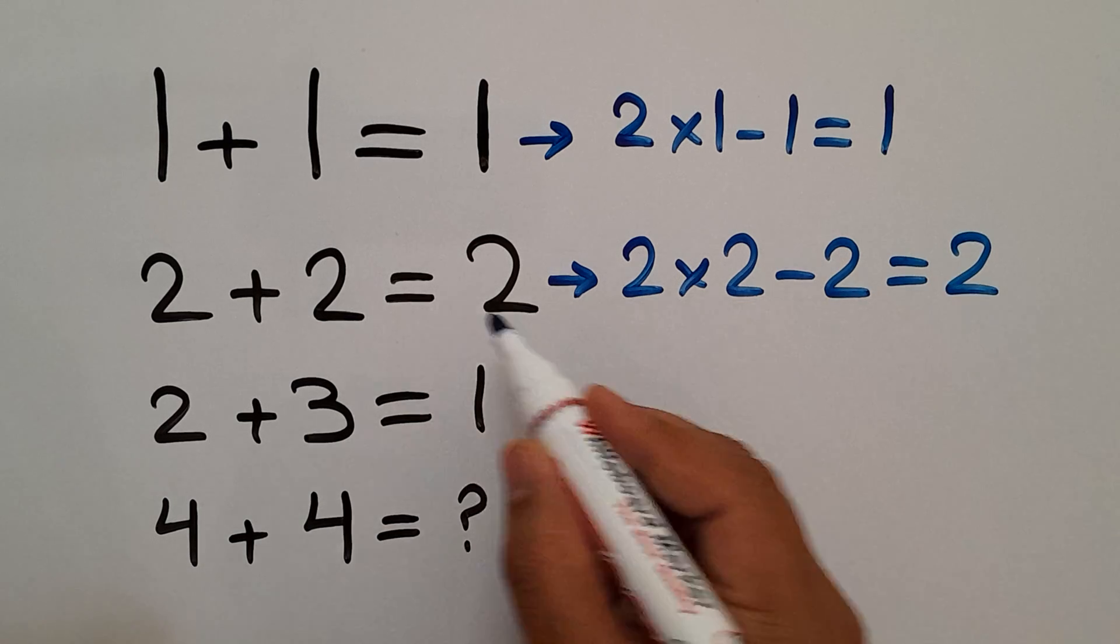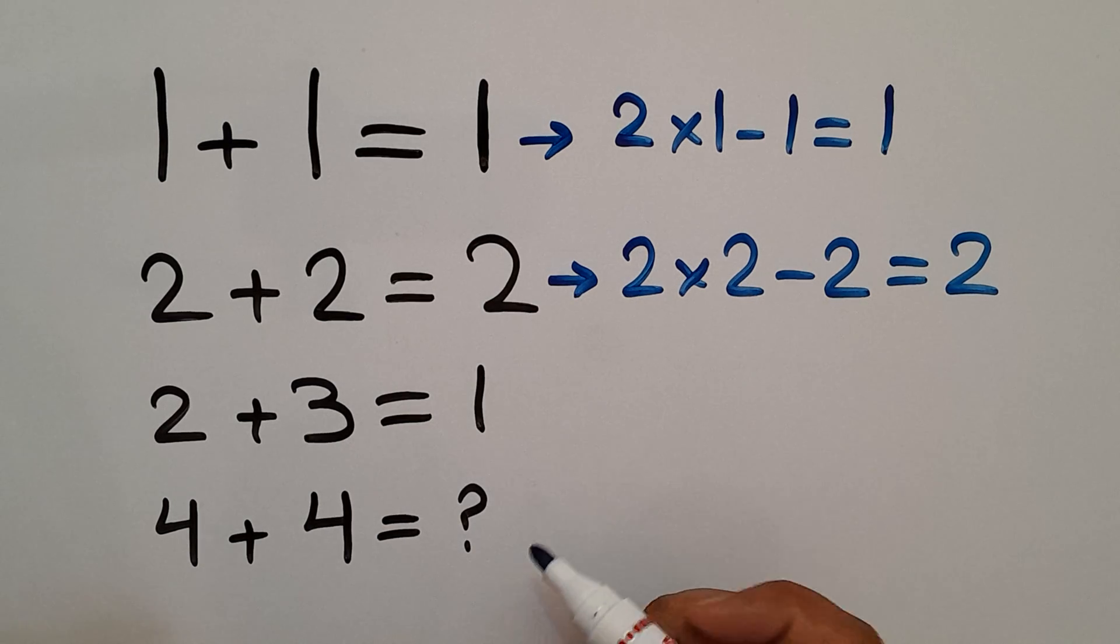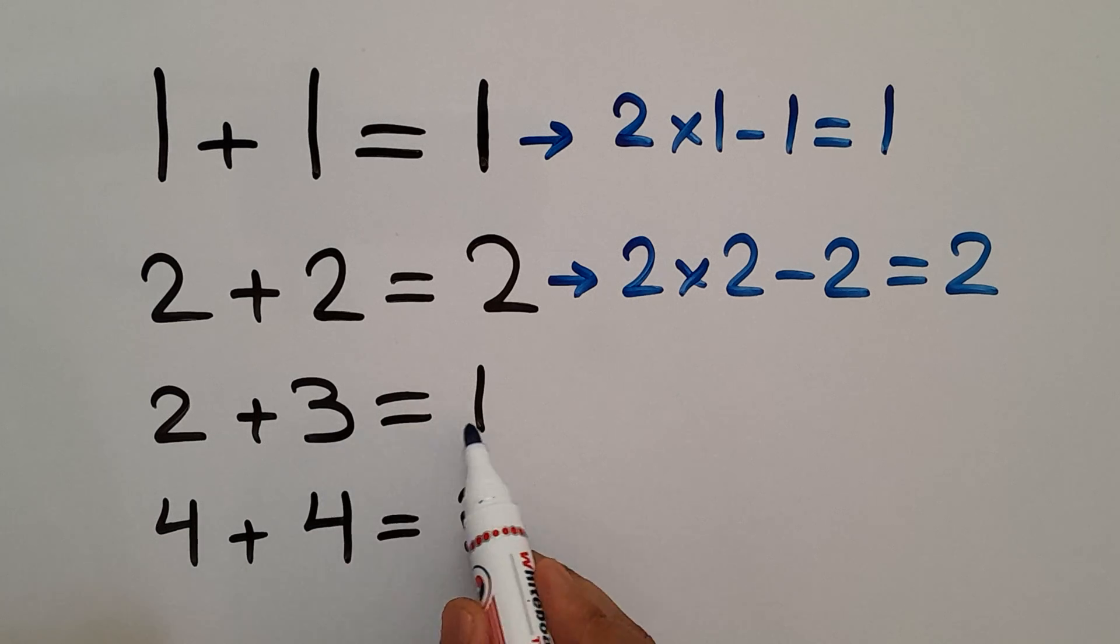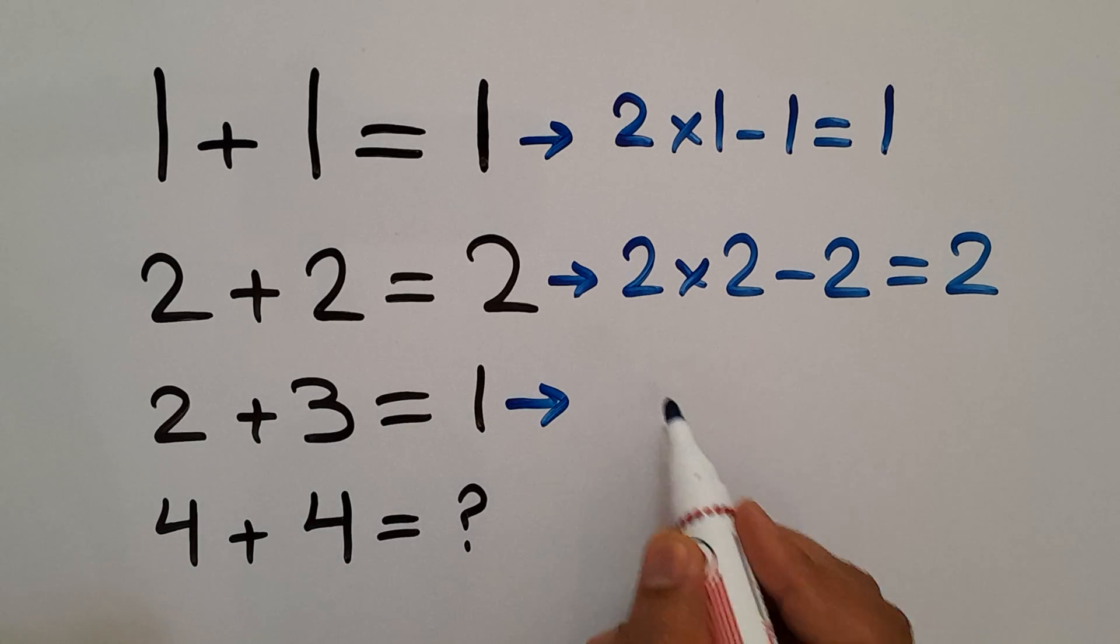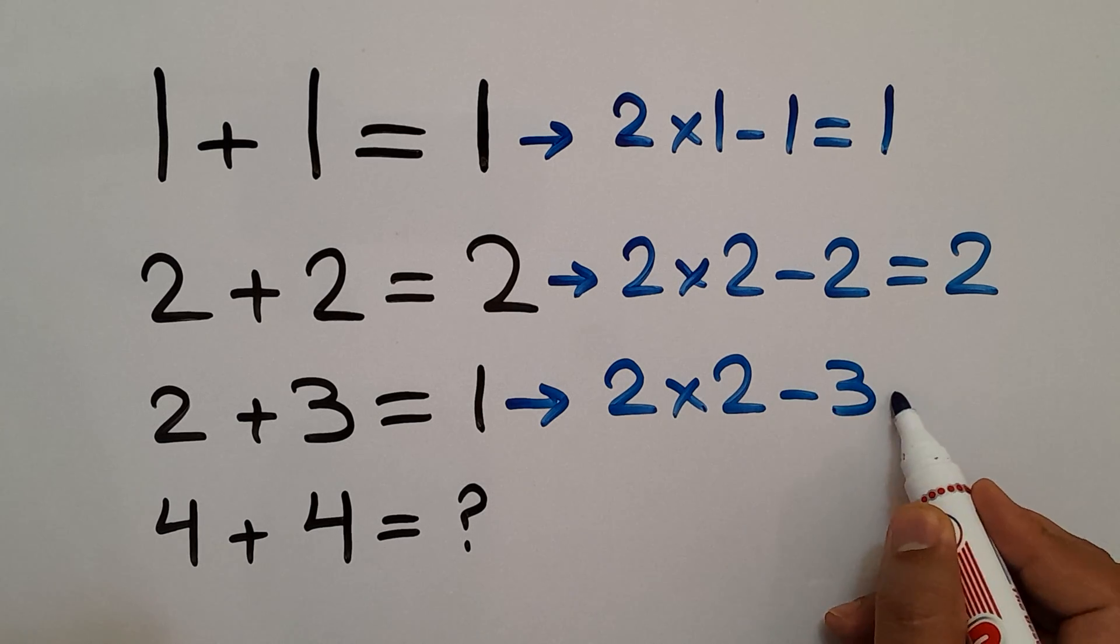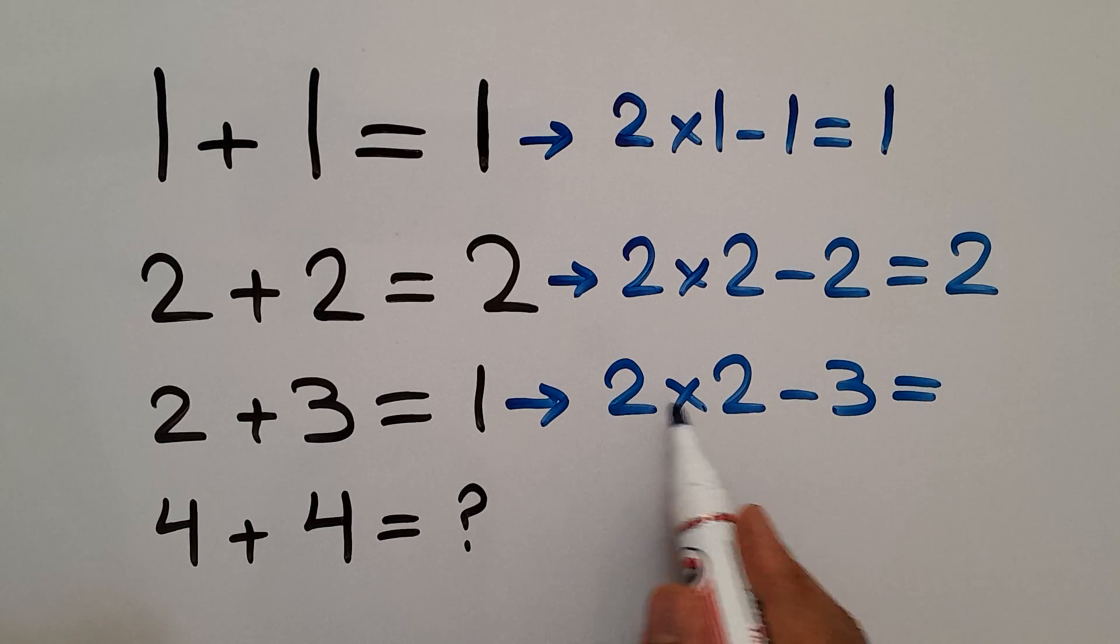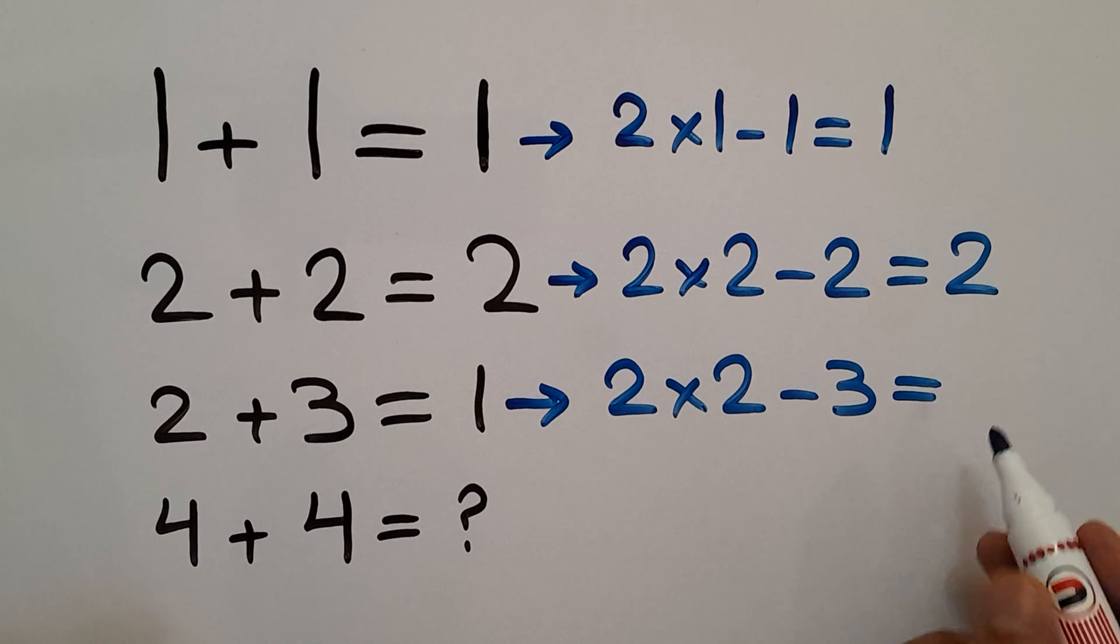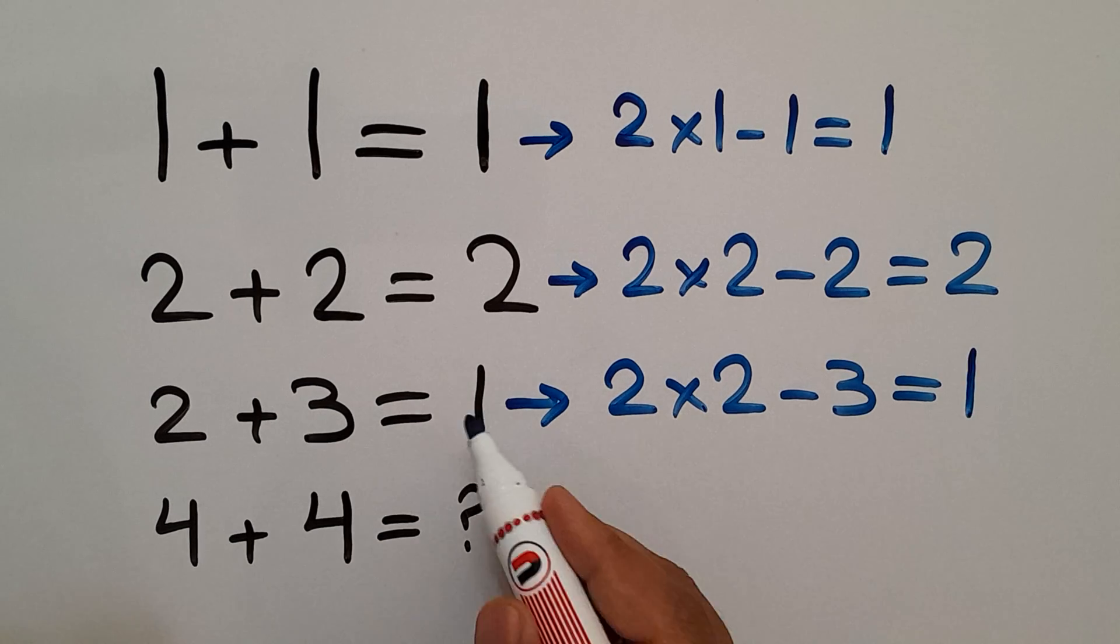And in the third line we have 2, 3, and 1. 2 times 2 minus 3 gives us... 2 times 2 equals 4, and 4 minus 3 equals 1, the right-hand side number.